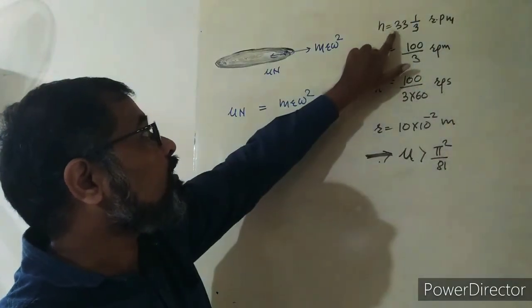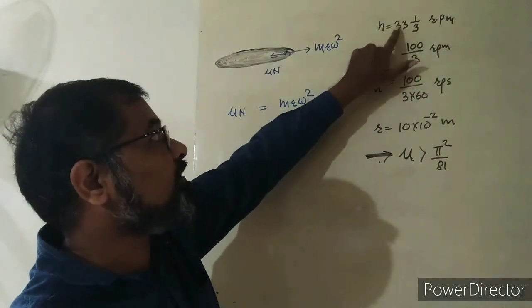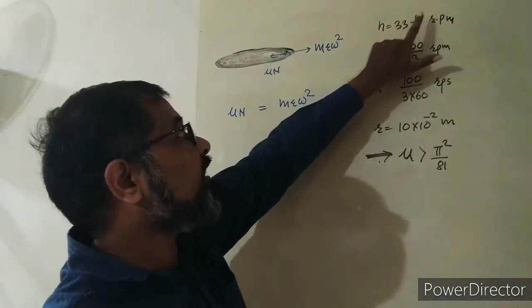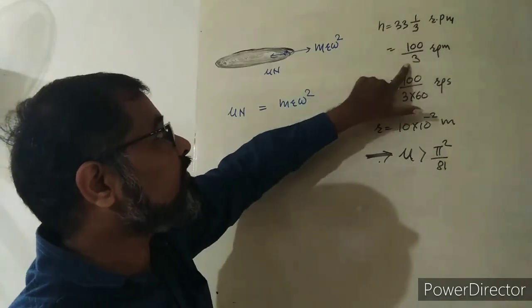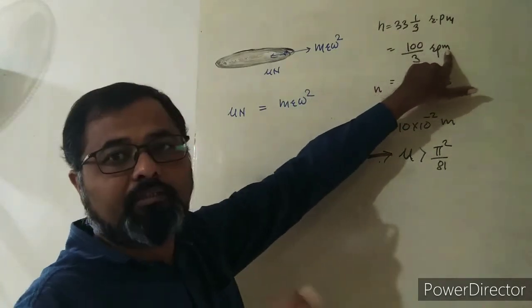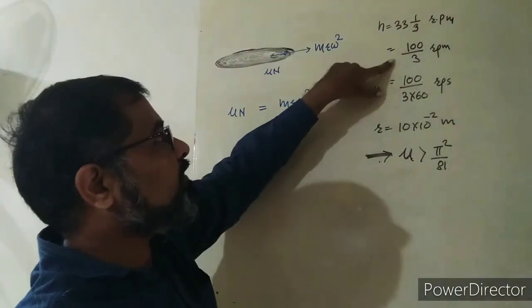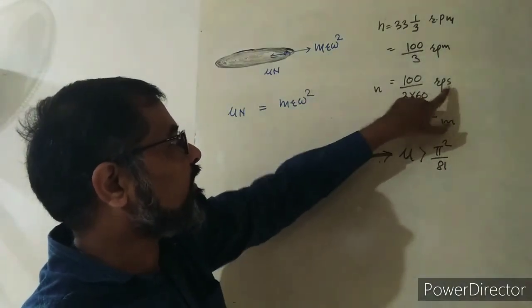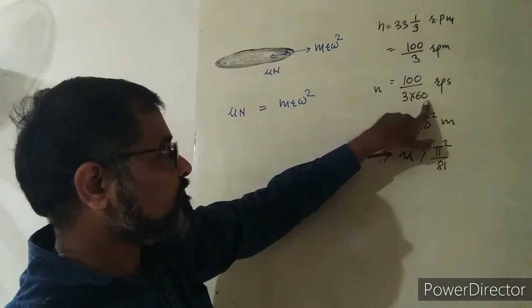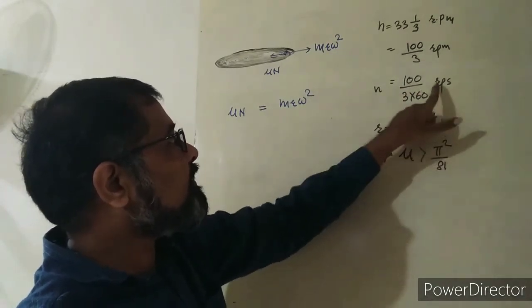...which is given as 100/3 (when multiplied by 3, we get 99 or approximately 100). That's 100/3 revolutions per minute. To convert frequency to per second, divide by 60, giving this frequency.